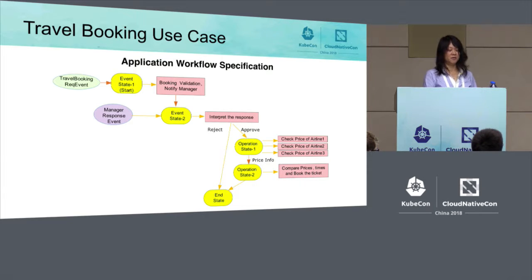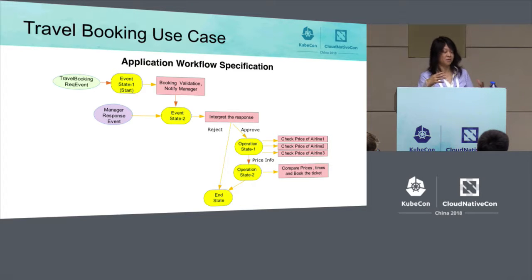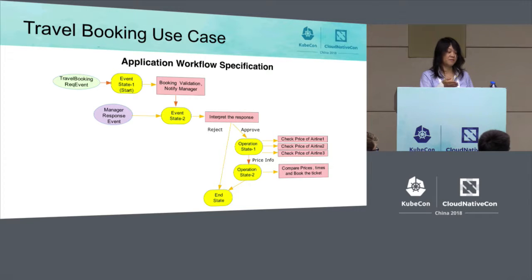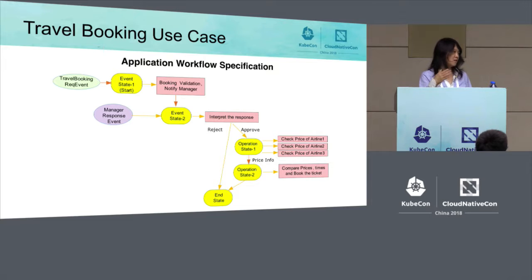Now I'll give a few more use cases to show how you can use the workflow model. All the use cases are simplified versions of real use cases — they're just meant to show how you can use the workflow model. This is a travel booking use case. The workflow starts with an event state. When the travel booking request event is received, the workflow triggers a travel booking validation function to run some validation, and then that function sends a notification to the manager for approval. The workflow then transitions to event state two.